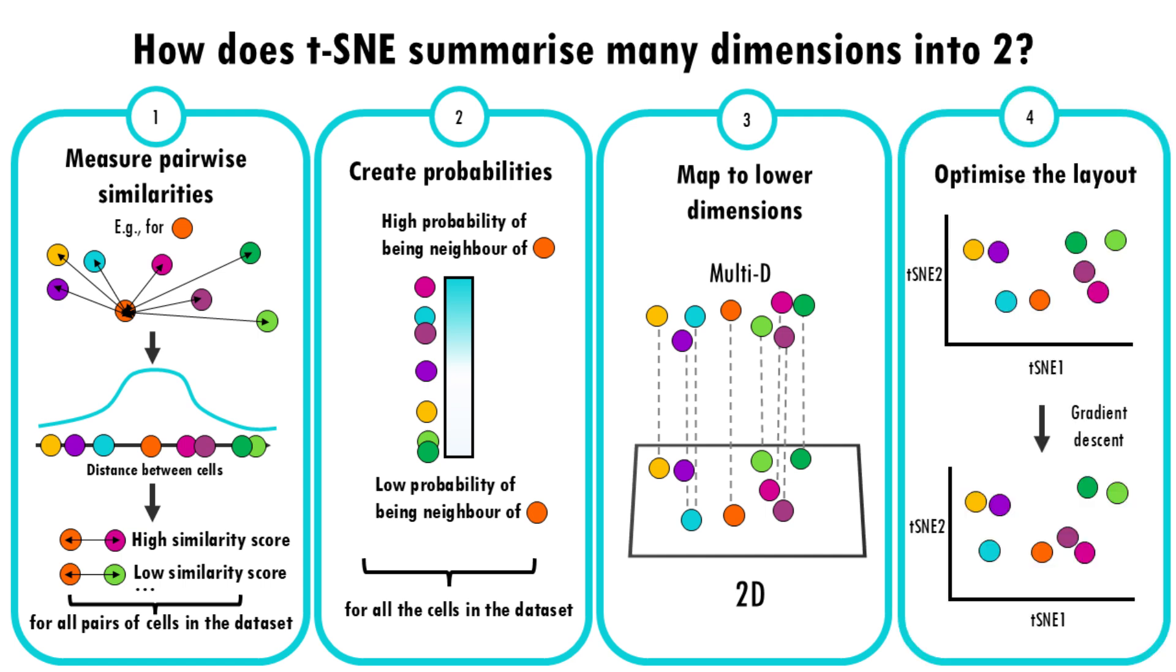And finally, t-SNE optimizes the layout. This is where the stochastic part comes in. t-SNE uses a technique called gradient descent, which is a way of adjusting the positions of the points in the lower dimensional space step-by-step, trying to make the distribution of similarities in the lower space match the original distribution as closely as possible.